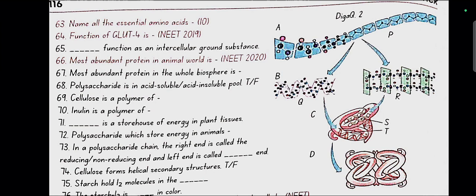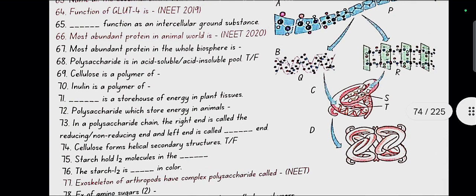Function of GLUT4 is it enables glucose transport into the cells. Collagen functions as an intercellular ground substance. Most abundant protein in animal world is collagen. Most abundant protein in the whole biosphere is rubisco. Polysaccharide is in acid insoluble pool.